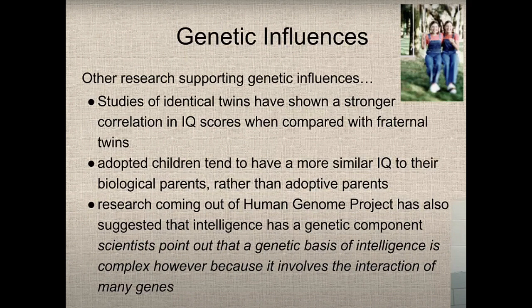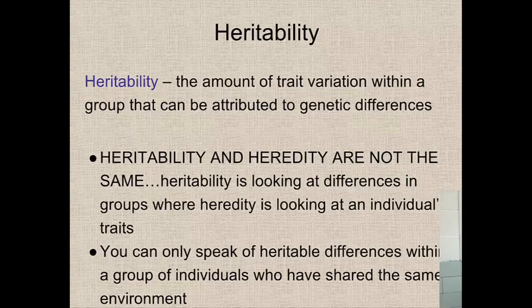Research from the Human Genome Project also suggested that intelligence has a genetic component. Scientists point out that the basis of intelligence is complex, however, because it involves the interaction of so many different genes. The last concept is heritability — the amount of variation within a group that can be attributed to genetic differences. Heritability looks at differences in groups, whereas heredity looks at an individual trait. You can only speak of heritable differences within a group of individuals who have shared the same environment.